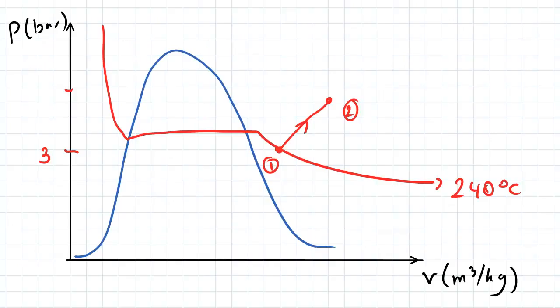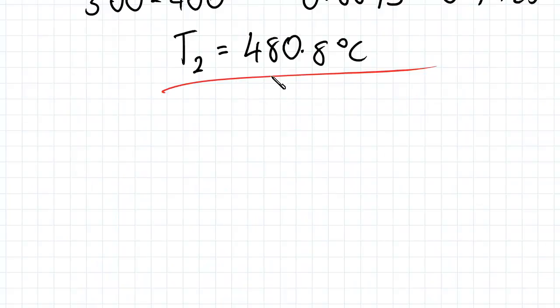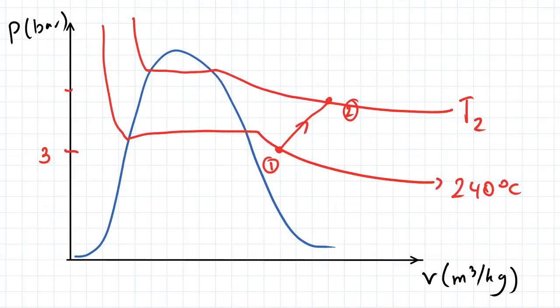And so if you go back to our P-V diagram, we need to add in some extra information that we now have, namely the temperature isotherm at state 2, which is going to be T2 equals 480.8 degrees Celsius. And so essentially what our work will be, our work will be the area underneath this process right here.